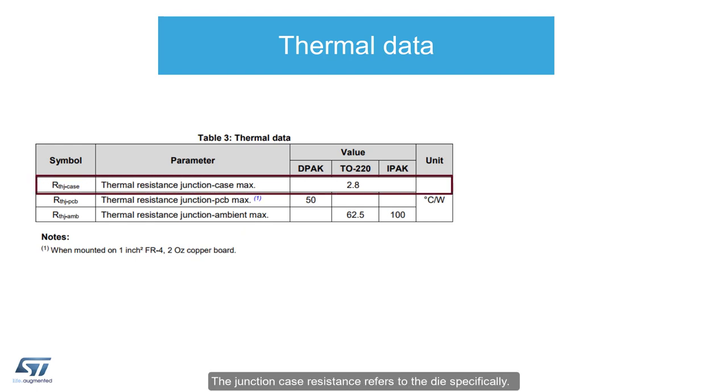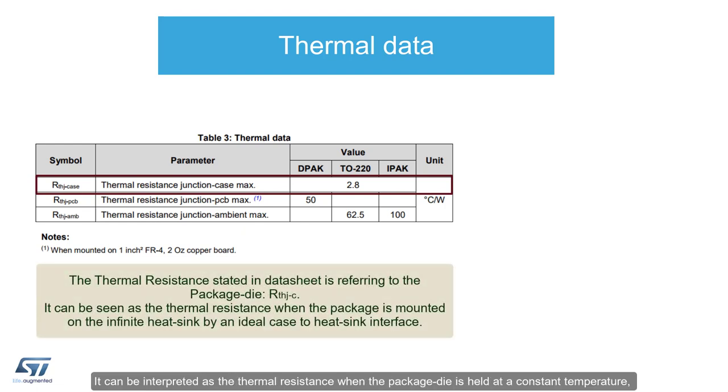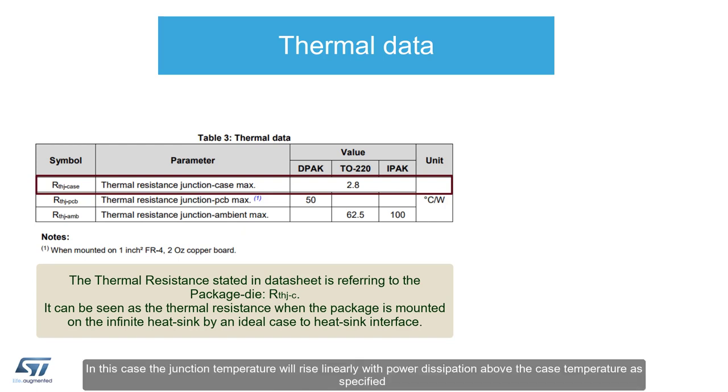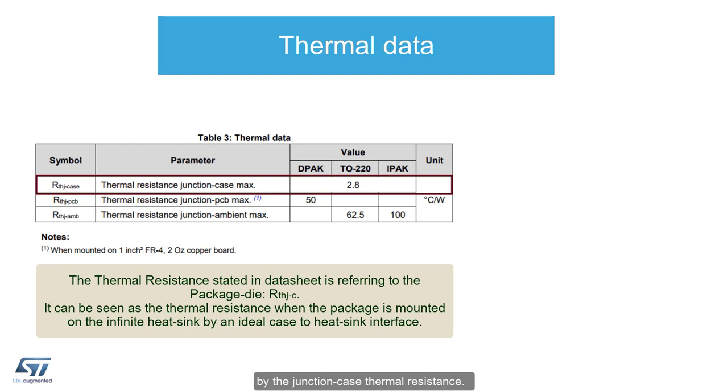The junction case resistance refers to the die specifically. It can be interpreted as the thermal resistance when the package is held at a constant temperature or mounted to an infinite heatsink. In this case, the junction temperature will rise linearly with power dissipation above the case temperature, as specified by the junction to case thermal resistance. It is typically lower as the silicon die increases in size.